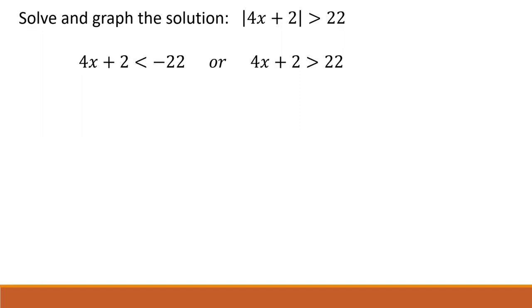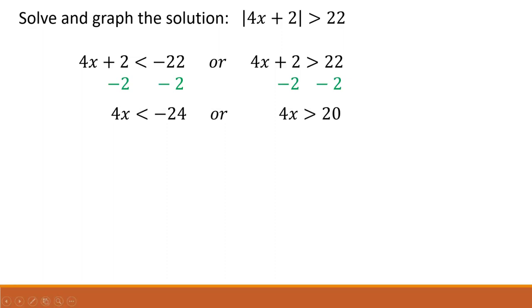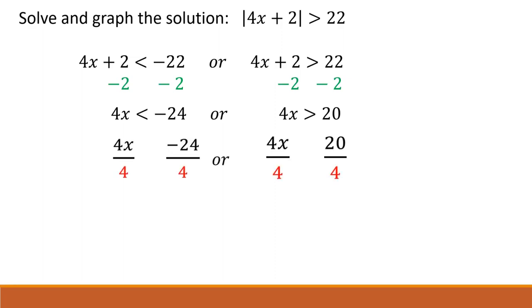We'll do the same steps to solve both inequalities at the same time. For both of them, we'll subtract 2 from both sides, which leads us to 4x is less than negative 24, or 4x is greater than 20. To isolate x, we'll divide both sides by 4. Since we're dividing by a positive number, the inequality signs remain pointing the same direction. Our solution is x is less than negative 6, or x is greater than 5.